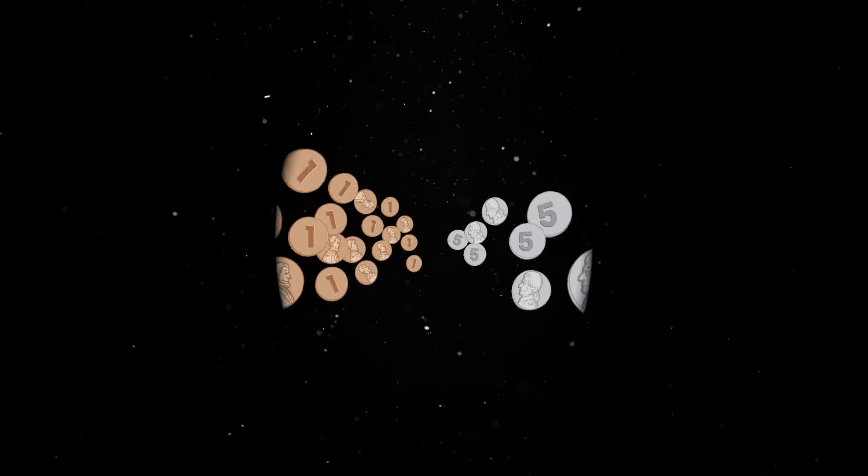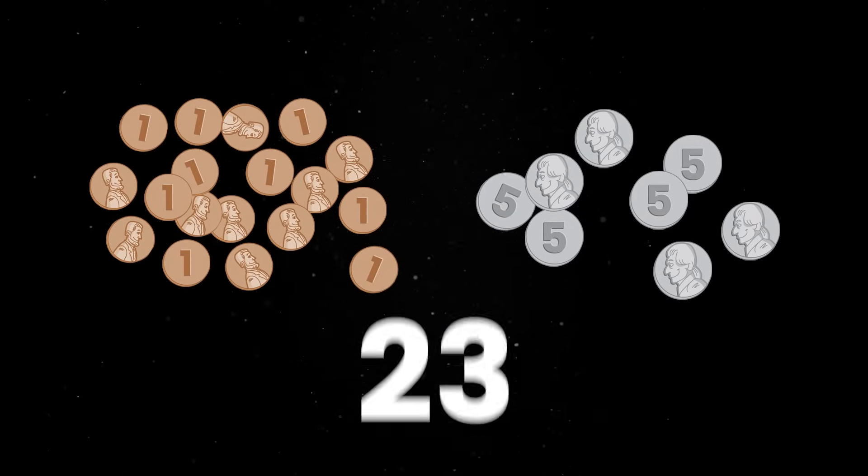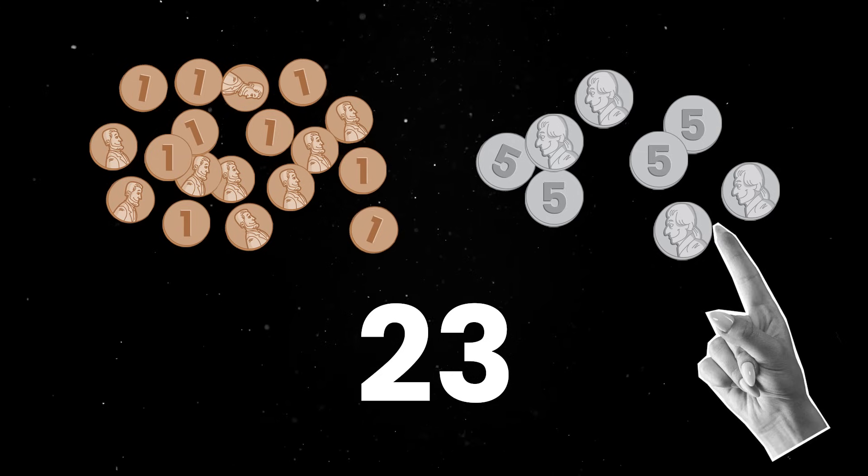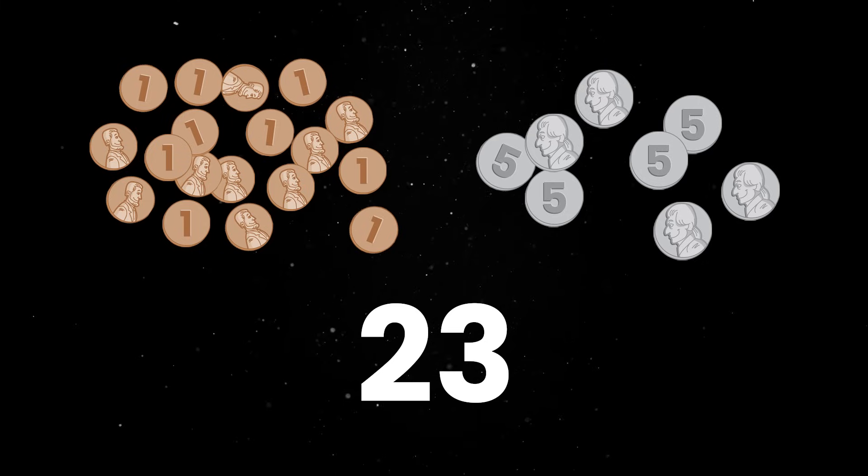Let's say you have a bunch of nickels and pennies and you want to know how many of each you need to have 23 cents. Of course, to get to the total, you need to sum up an exact number of nickels with an exact number of pennies. Luckily for us, this is pretty easy to solve.